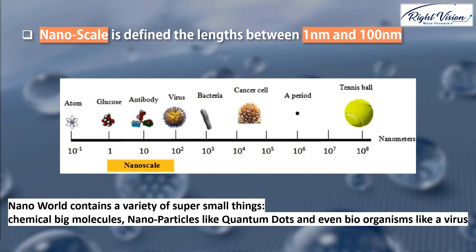I guess now you have a good sense of nanoscale and how relatively small it is. But I'd like to mention that it's not just a matter of size. The world at the nanoscale and even microscale looks totally different from daily life objects. Even the physics principles that govern small sizes are very different. I'll talk about the rules and principles of the nanoworld in future lessons, but for now let's find out how the nanoworld looks by means of some examples.